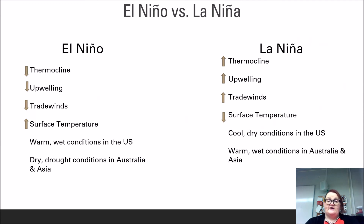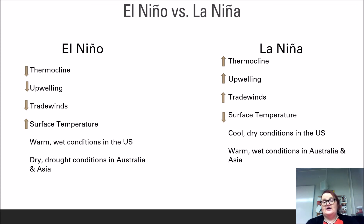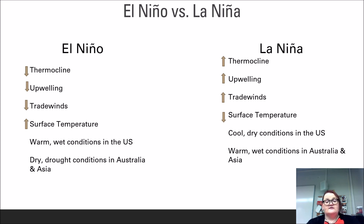El Niño and La Niña are exact opposites of each other. In an El Niño system, the trade winds become weaker, stalling warm water between South America and Australia. This leads to increased surface temperatures, which causes the thermocline to flatten, leading to lower upwelling. El Niño years are characterized by warm and wet conditions in the U.S. and dry, drought-like conditions in Australia and Asia. In a La Niña year, the exact opposite happens — strong trade winds carry warm water further toward Australia, leaving average surface temperatures lower than normal, causing a steep thermocline which encourages upwelling. This pattern often causes cool and dry conditions in the U.S. and warm, wet, and sometimes flooding conditions in Australia and Asia.